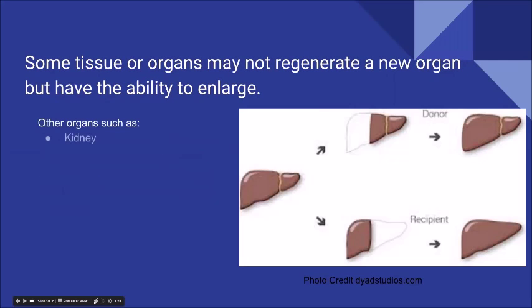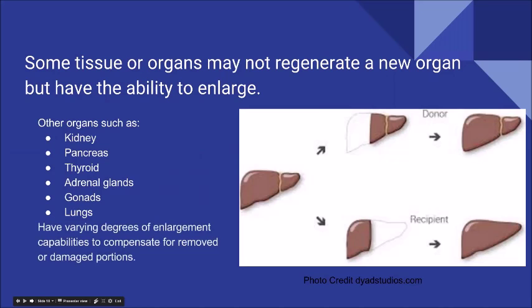Other organs such as kidney, pancreas, thyroid, adrenal glands, gonads, and lungs have varying degrees of enlargement capabilities to compensate for removed or damaged portions. It's an incredible way that our body systems have been designed to protect ourselves and have a self-healing mechanism.